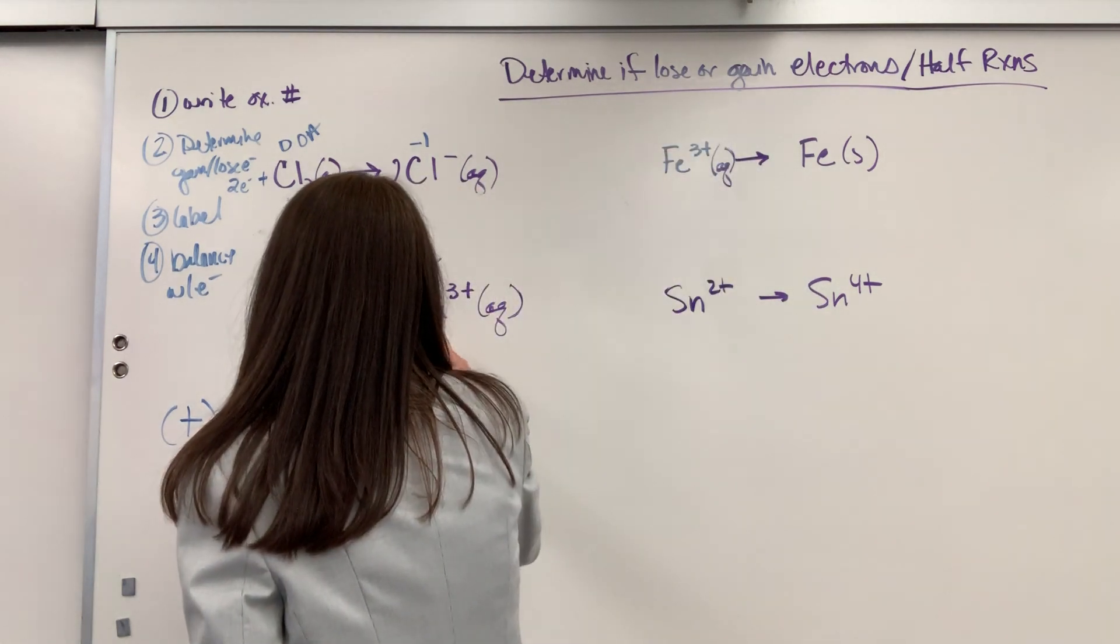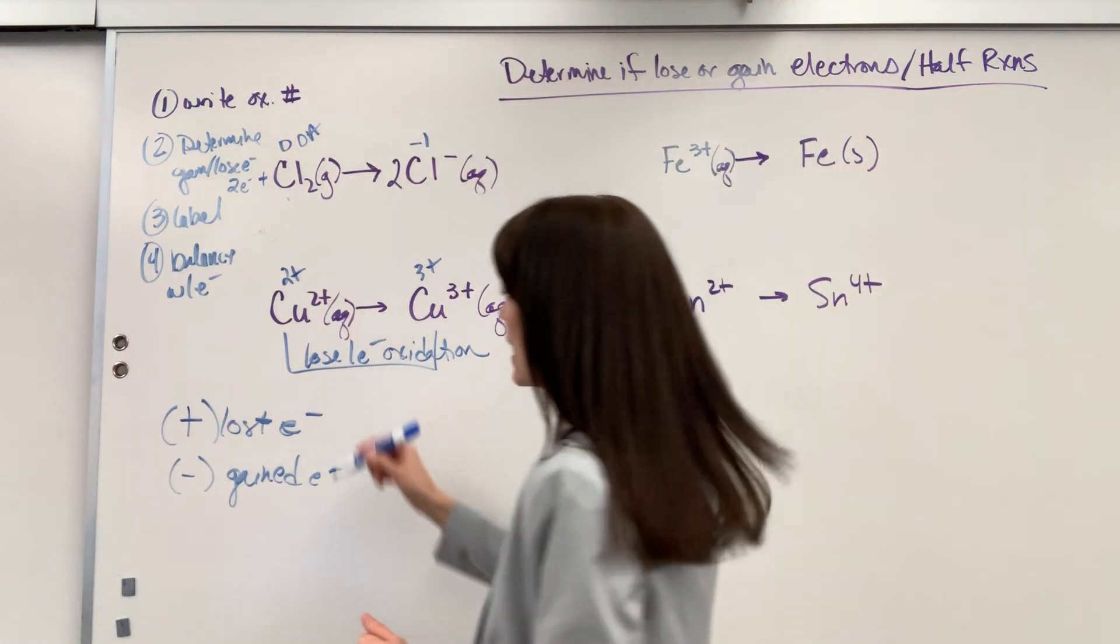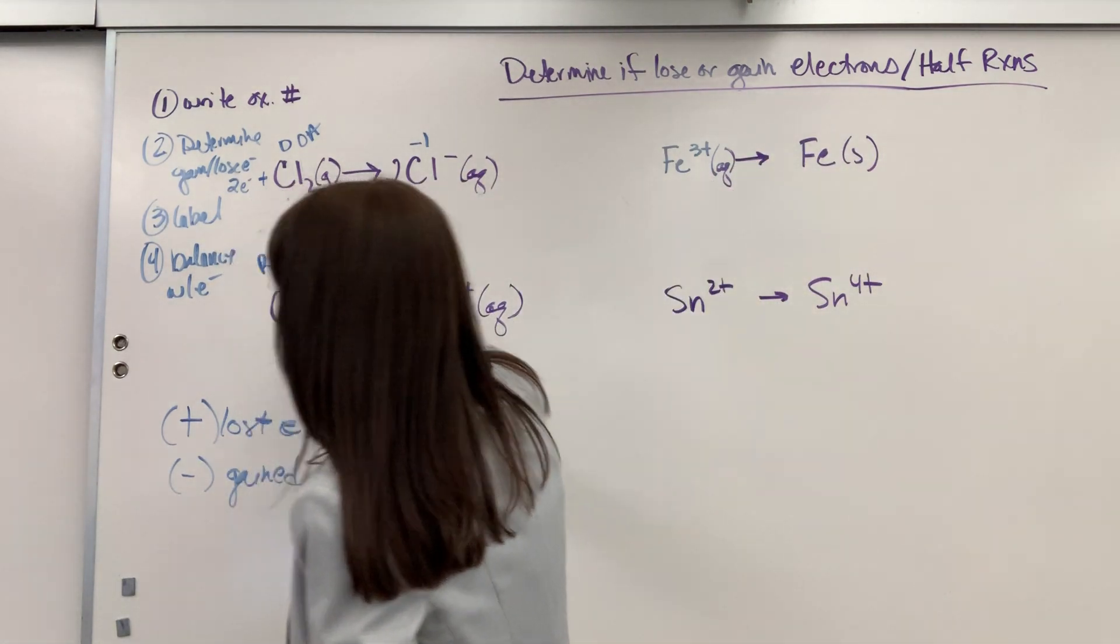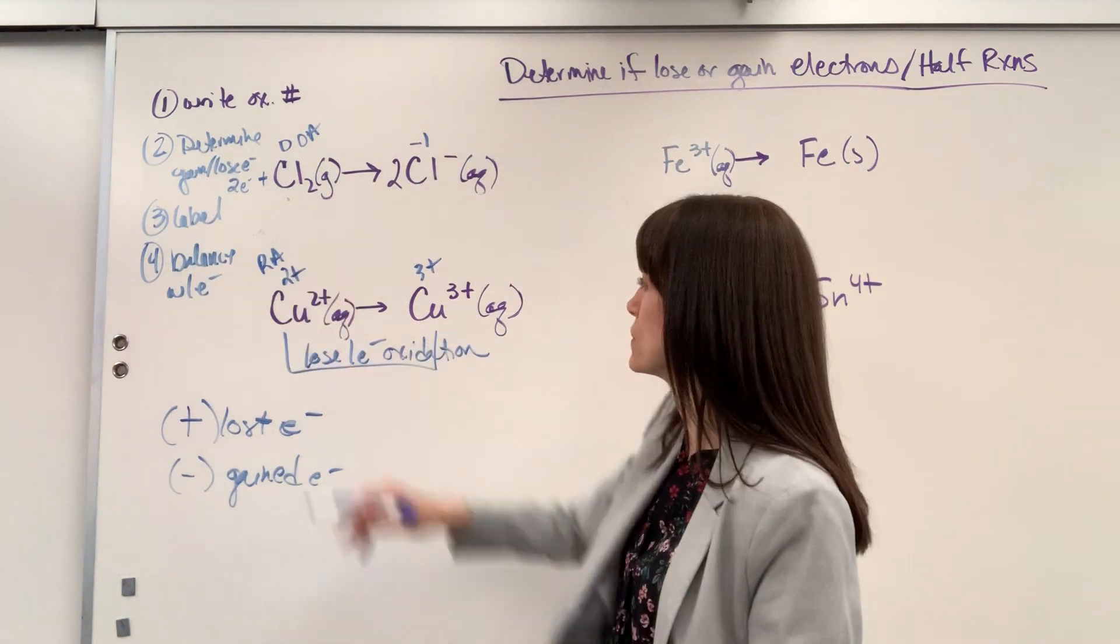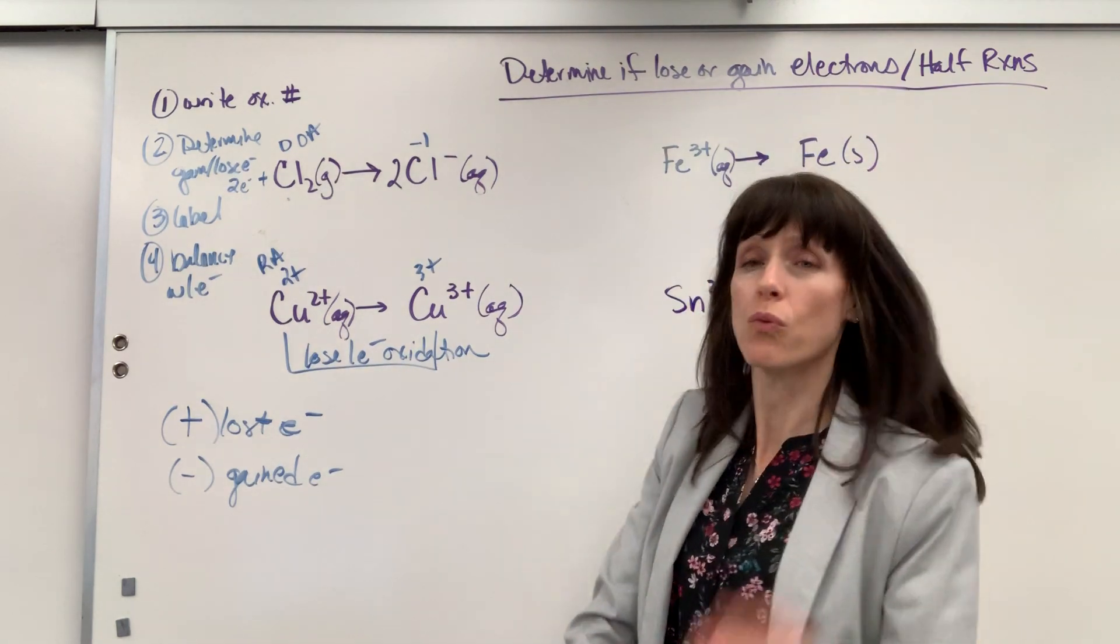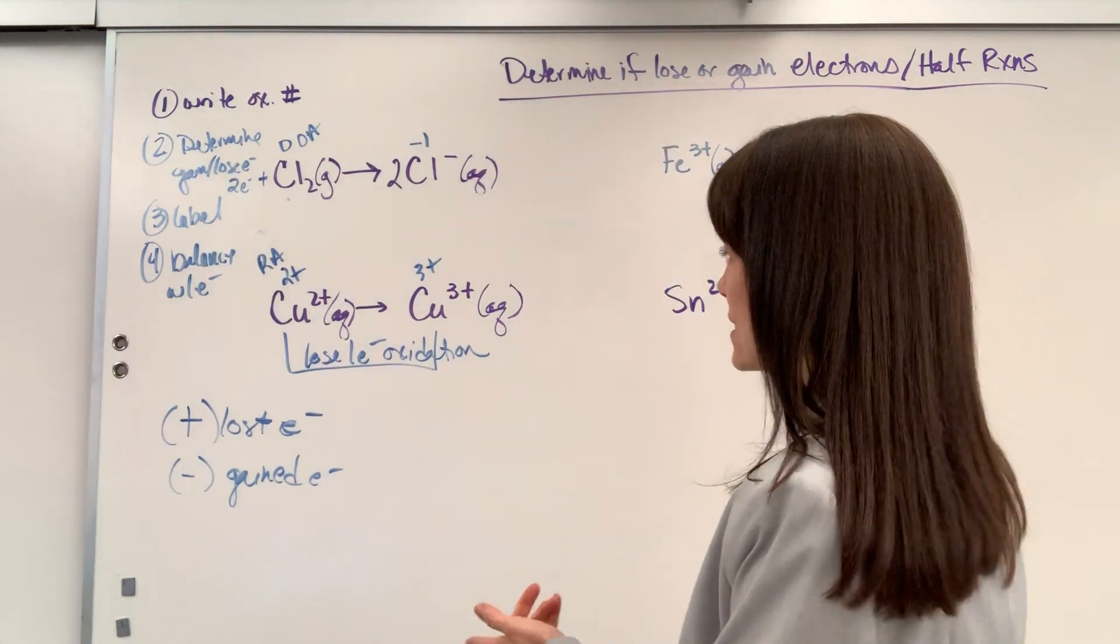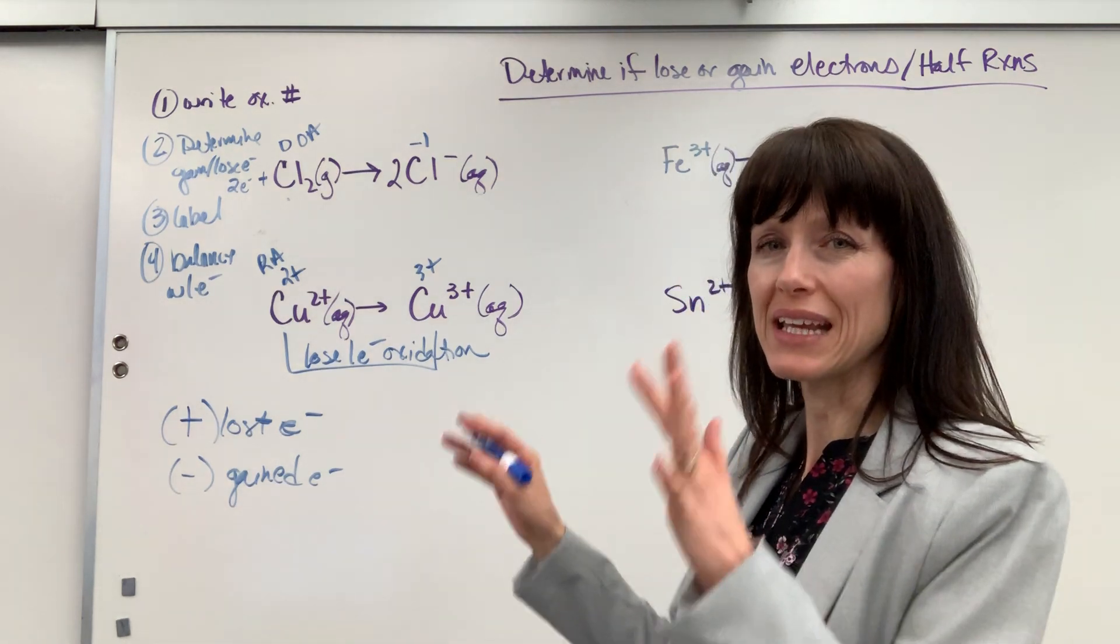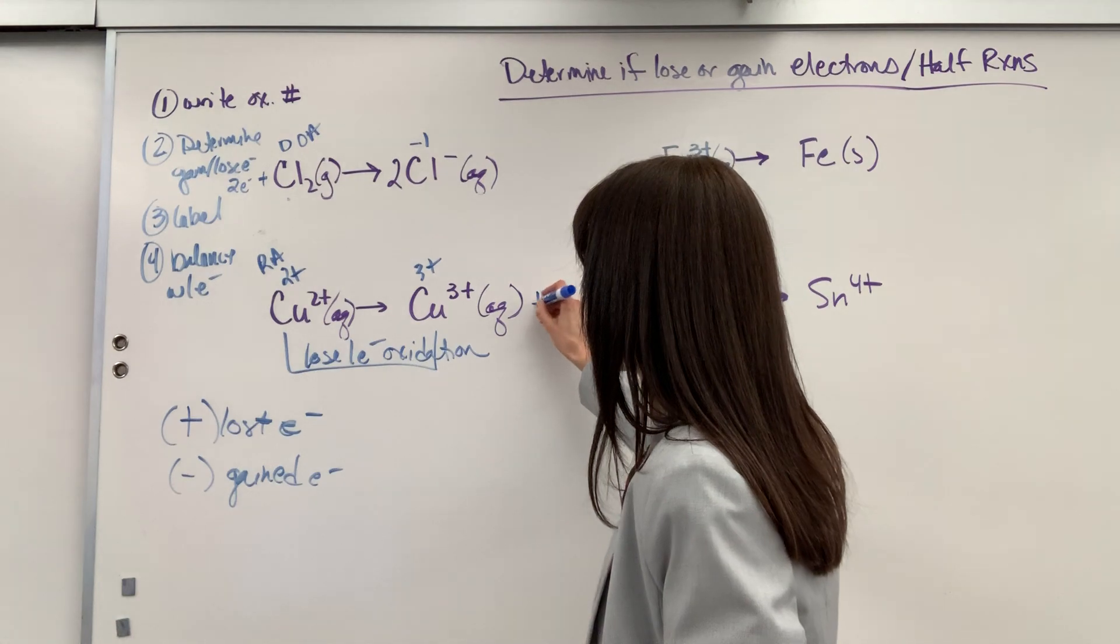So this is oxidation. And then a little reminder, whatever's oxidized is the reducing agent, has to force something else to gain electrons, be reduced. So whatever's oxidized is the reducing agent. And now I need to balance electrons. So I have one electron that's lost. Where do I write it? Do I write it on the reactants or product side? Remember, you need equal electrons on both sides.